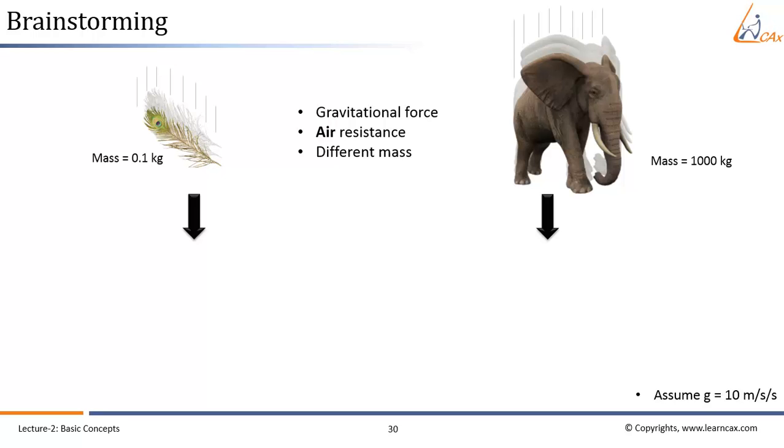From our practical observations and human instincts, most of us will say, the elephant which is heavier in mass will fall first. It might be correct to some extent, but are we saying the object with more mass experiences less air resistance?